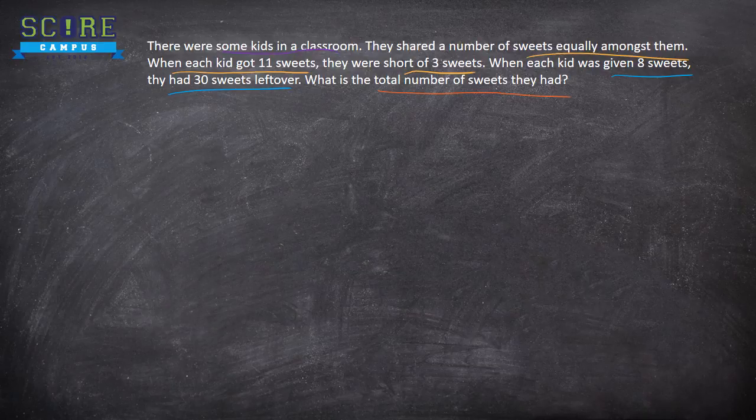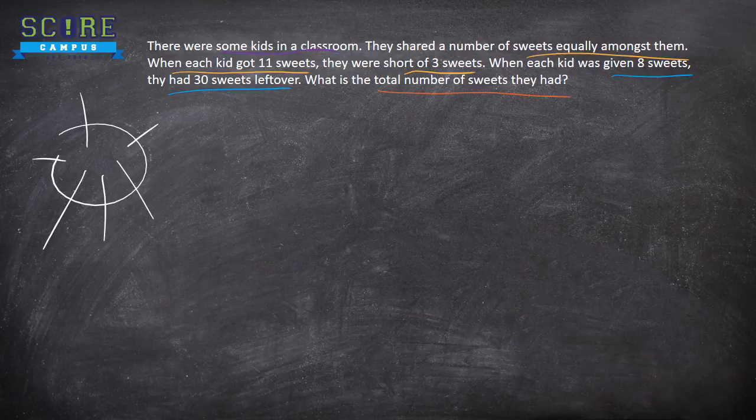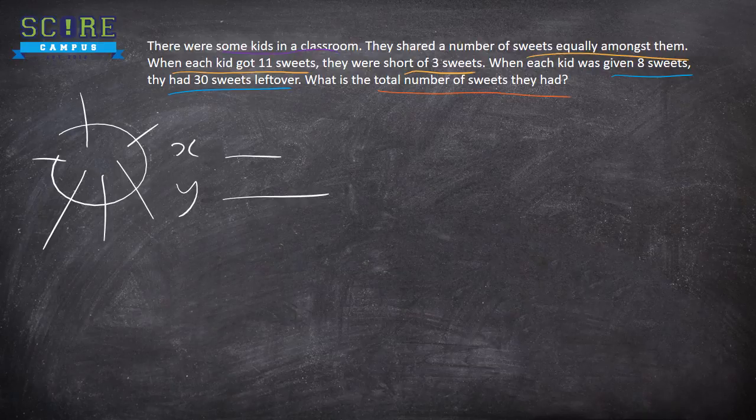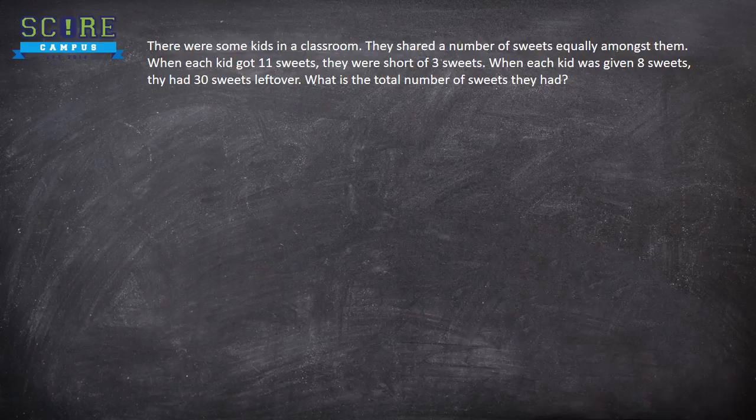Firstly, how to recognize this question, very easy. There were a certain number of things. They were shared amongst a certain number of people. And when they got a certain number X, they had some short and a certain number Y, they had some extra. So you need to find the total number of sweets or total number of people.